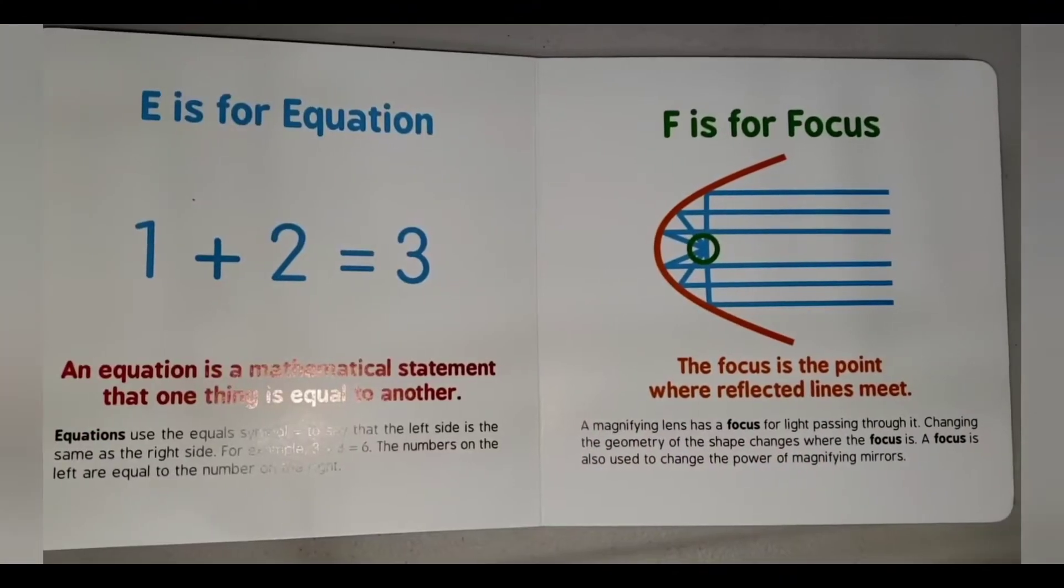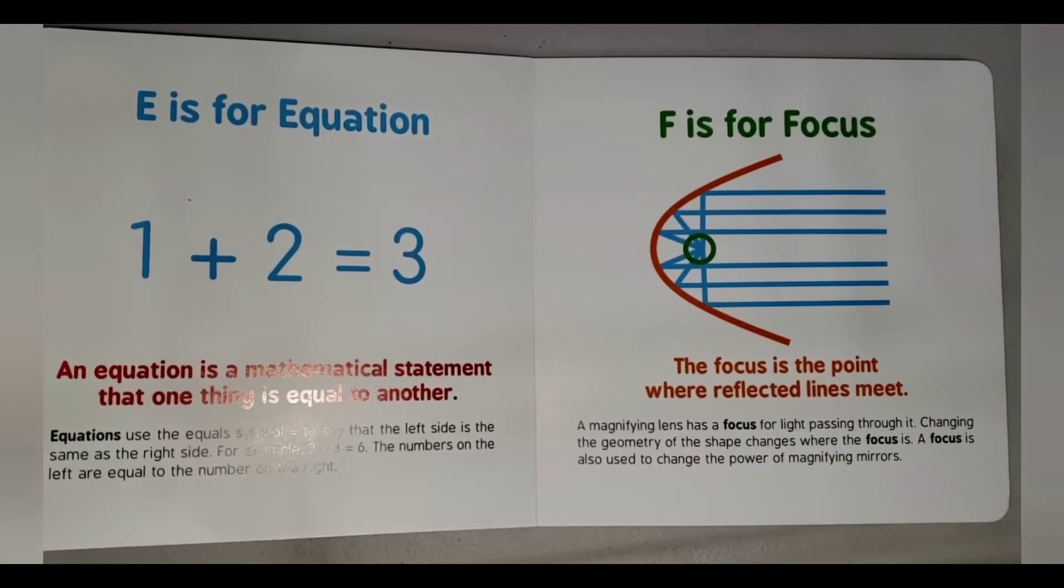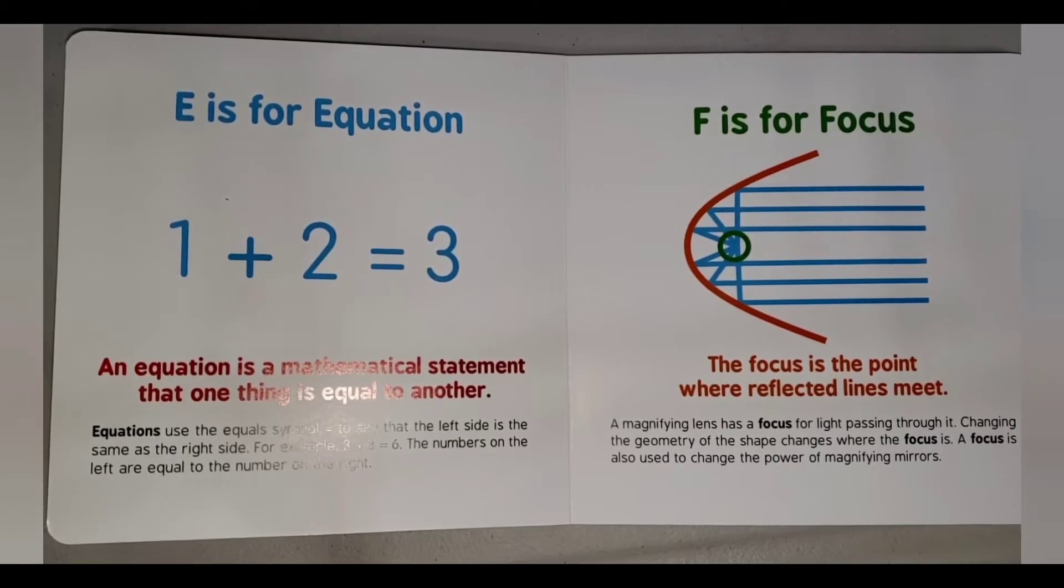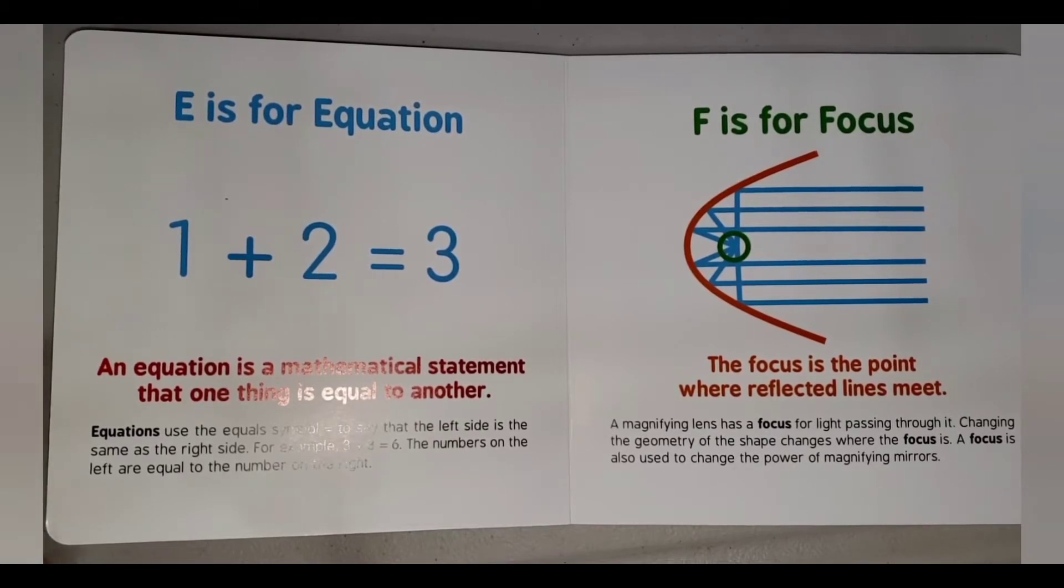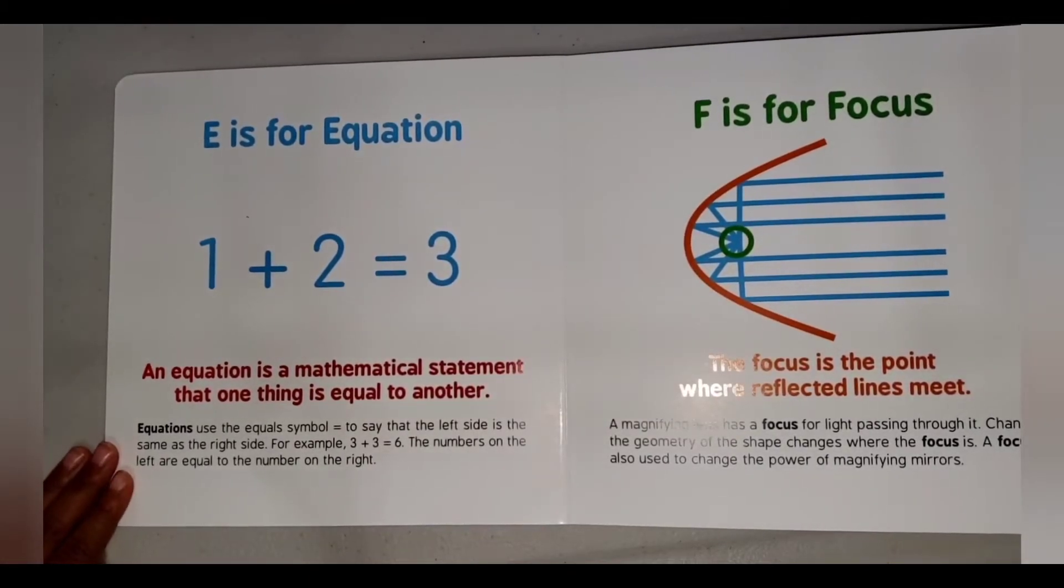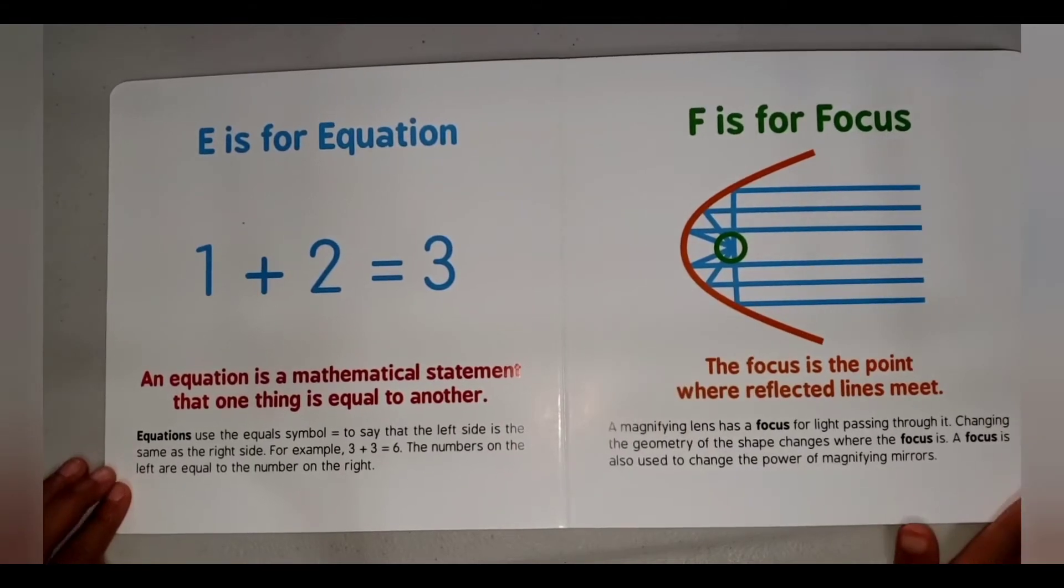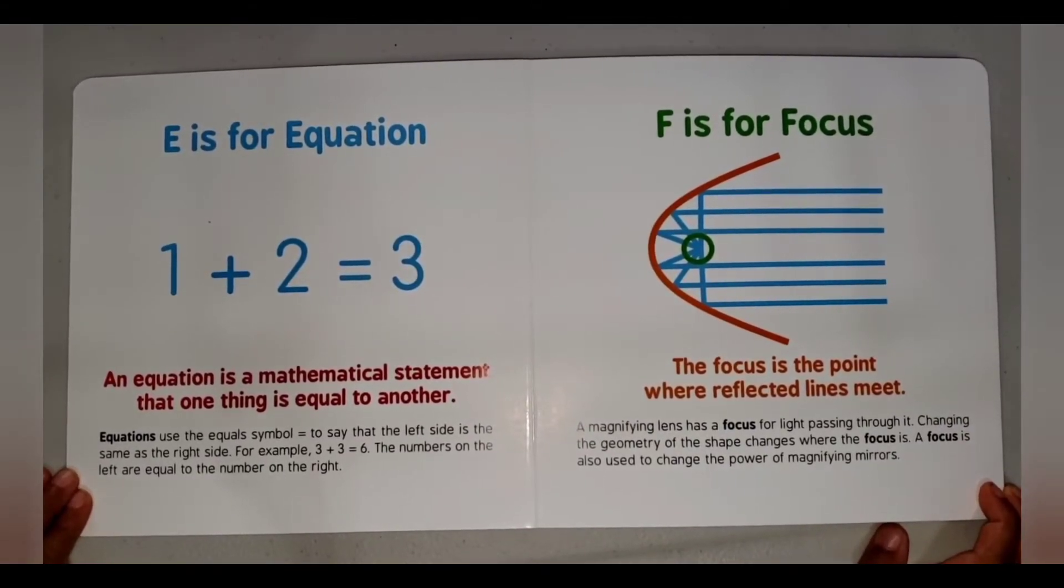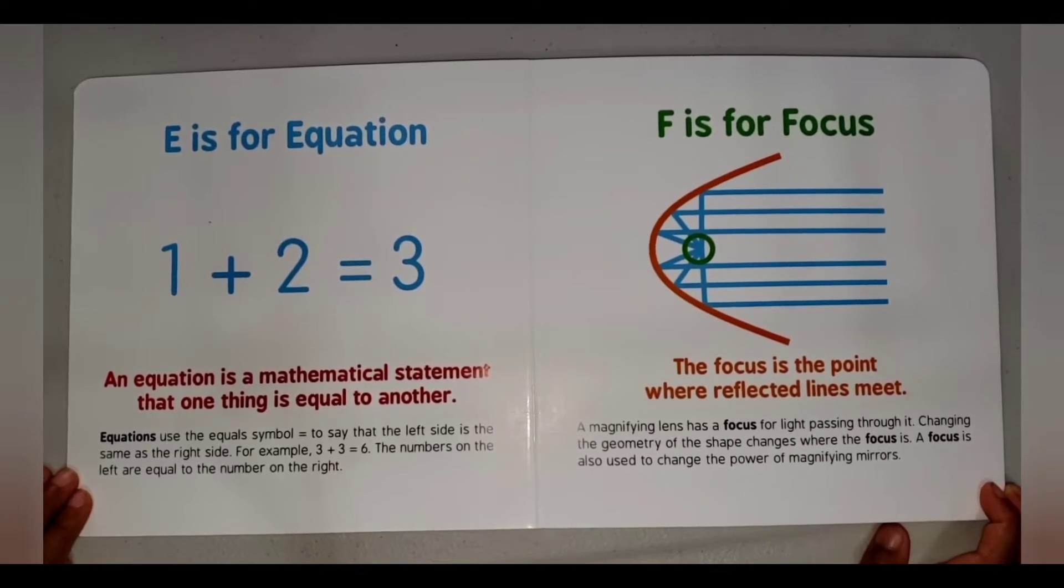E is for Equation. An equation is a mathematical statement that one thing is equal to another. Equations use the equal symbol to say that the left side is the same as the right side. For example, 3 plus 3 equals 6. The numbers on the left are equal to the number on the right.